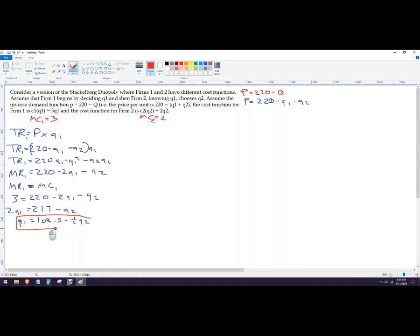Now, firm 2's reaction function is a little different because they have a different marginal cost. We don't need to redo the total revenue because they're both facing the same demand function. So I'll just use the same demand function here, or sorry, total revenue function. So that's going to be 220 Q2 minus Q2 squared minus Q2 Q1. Marginal revenue function here, 220 minus 2Q2 minus Q1. This is supposed to be a 2.